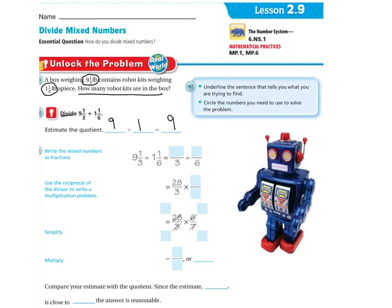First, write the mixed numbers as fractions — you cannot divide a mixed number by a mixed number; you need to make it a fraction divided by a fraction. So we rewrite the problem. We change nine and one third: multiply three times nine is 27, plus one is 28, so we have 28 thirds.